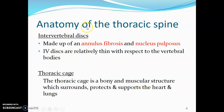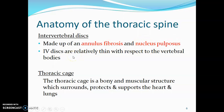In between the vertebrae you have the intervertebral discs. Intervertebral discs are made up of an outer annulus fibrosus, which is fibrocartilaginous, and an inner nucleus pulposus, which is a gel-like substance that is a remnant of the notochord. The intervertebral discs are usually thin with respect to the vertebral bodies.